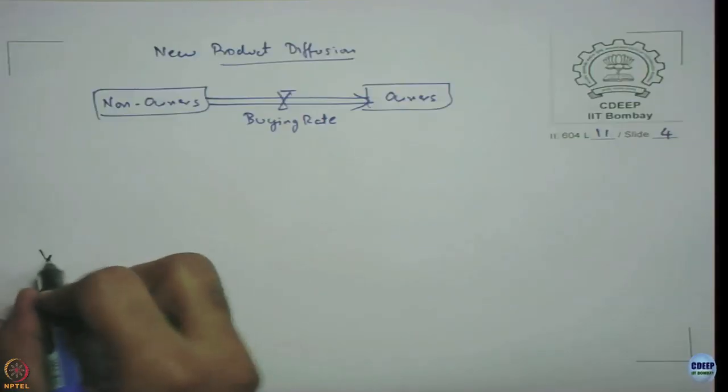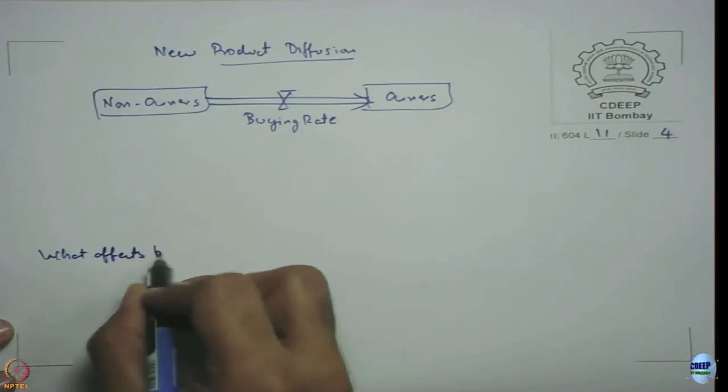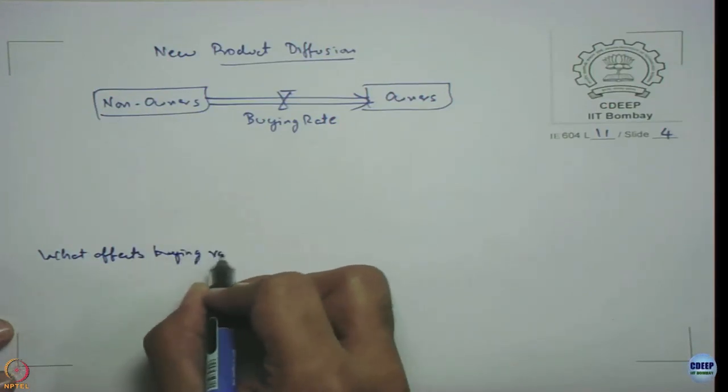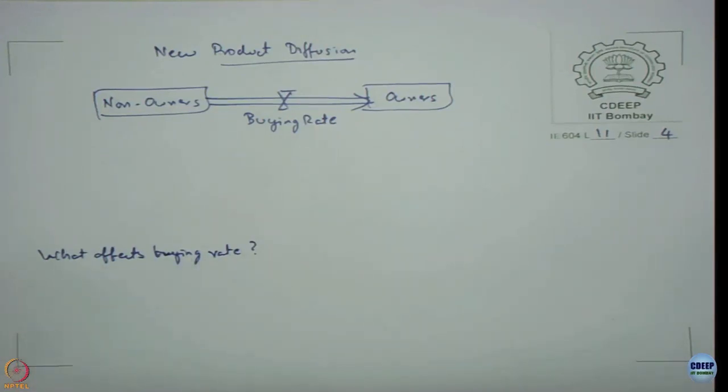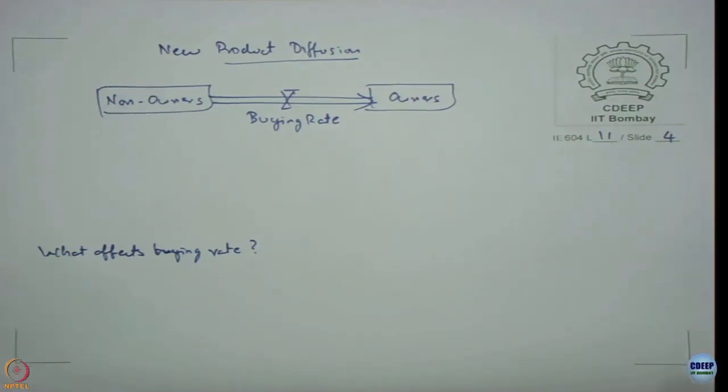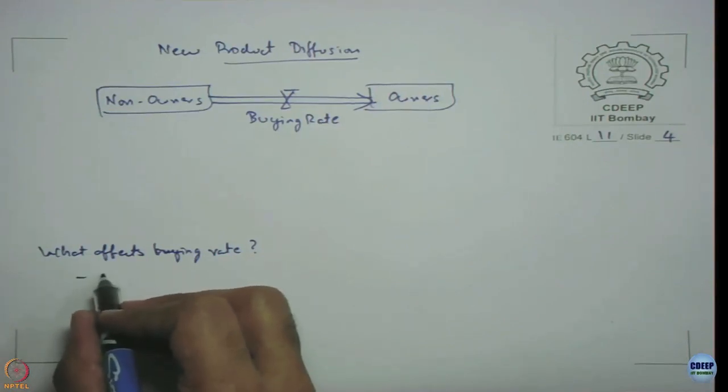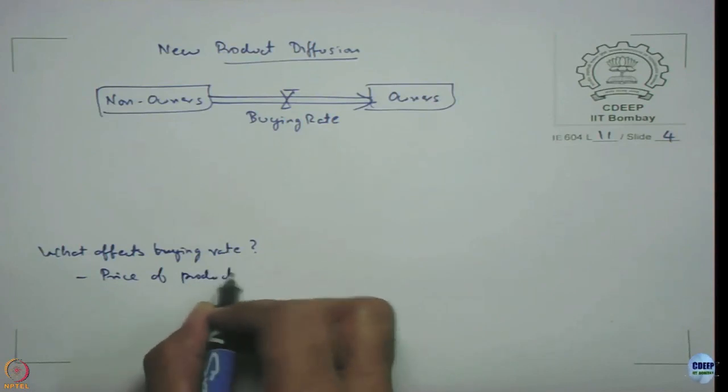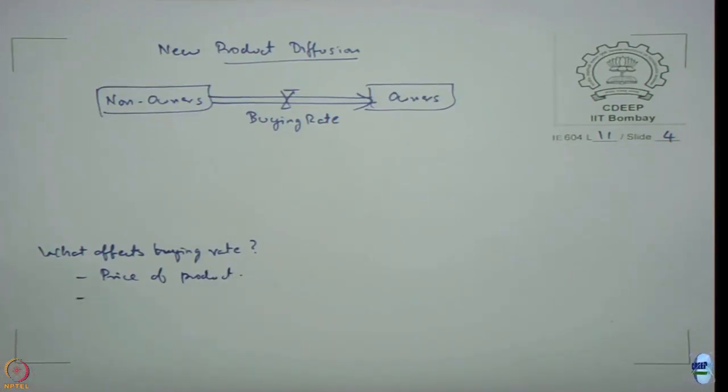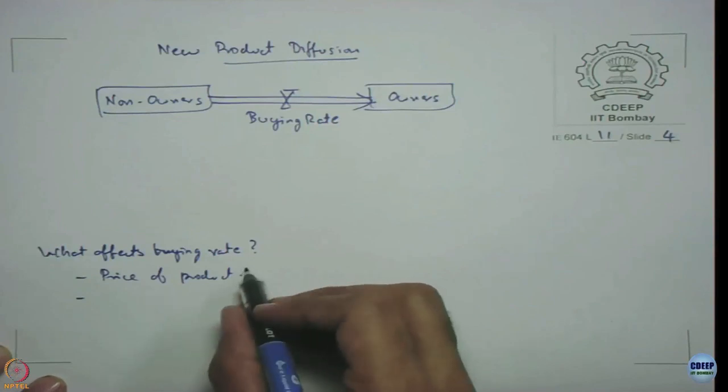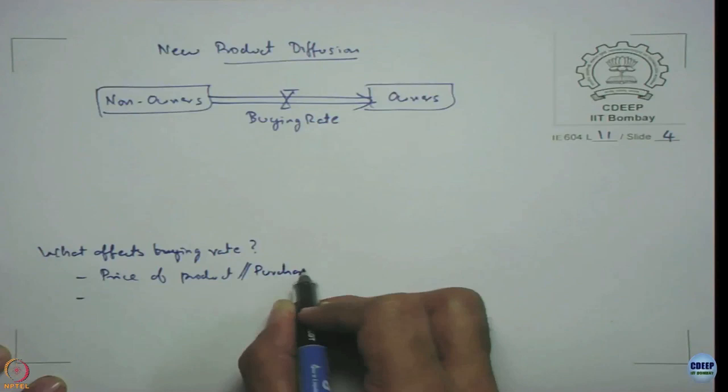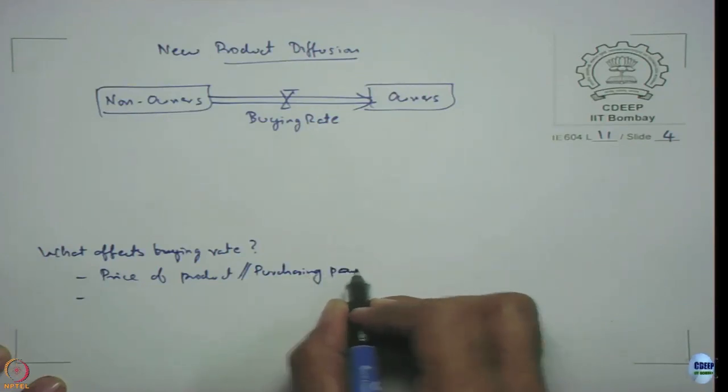Now, what affects this buying rate? There are various things some more assumptions probably I have to list before I can ask you that question in all fairness. Let us write whatever comes to your mind. Cost or price. Let us just change it into something called as purchasing power that takes care of your income as well as the price of product etcetera.